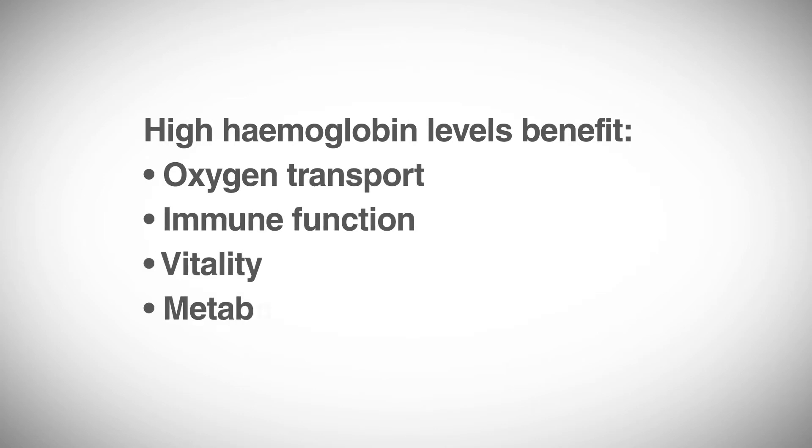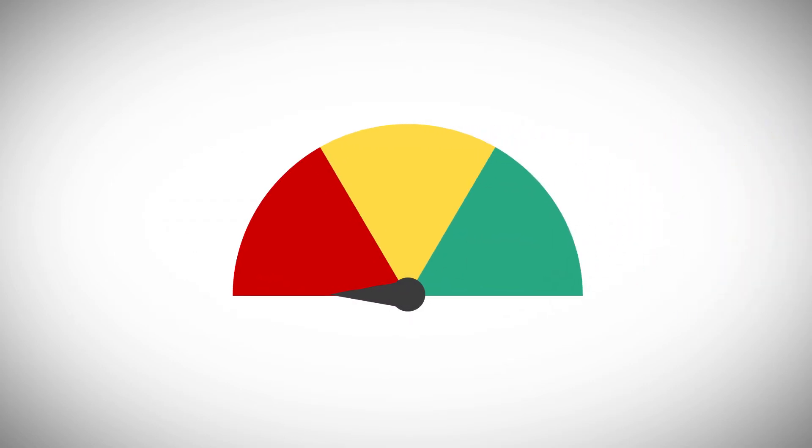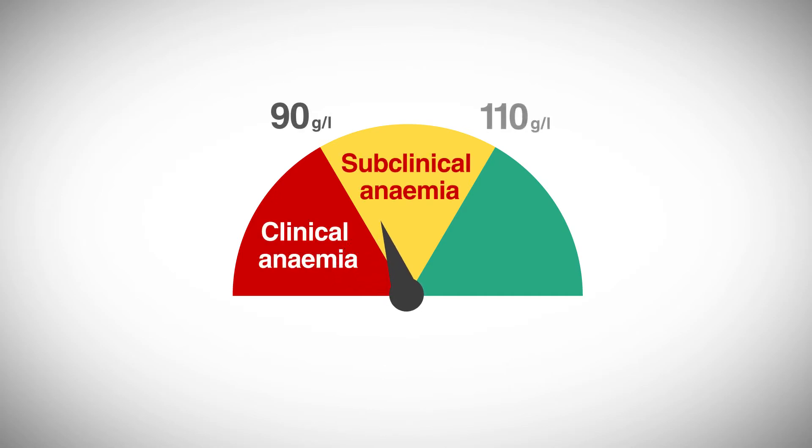High hemoglobin levels benefit oxygen transport, immune function, vitality and metabolism in piglets. The relationship between hemoglobin levels and piglet anemia is also well documented. Hemoglobin levels below 90 equals clinical anemia. Levels between 90 and 110 equals subclinical anemia. Levels at or above 110 grams per liter is optimal.